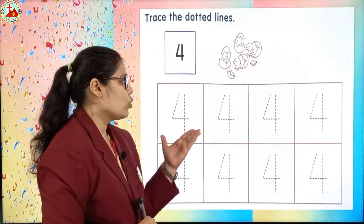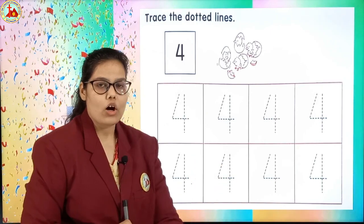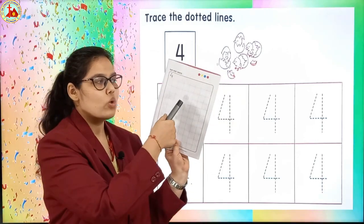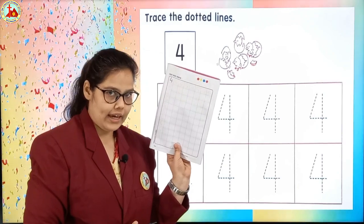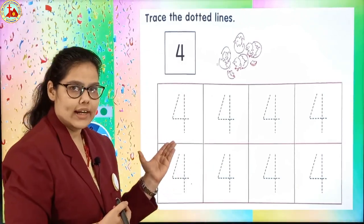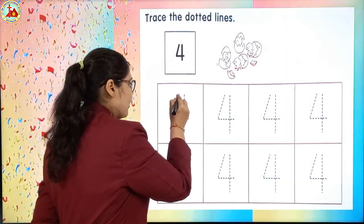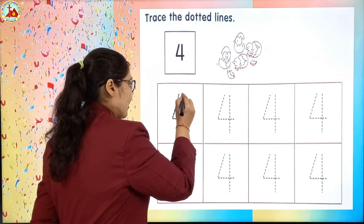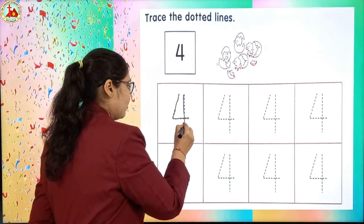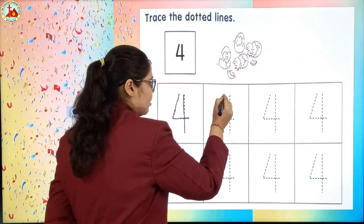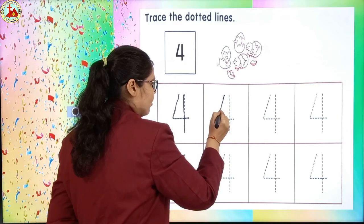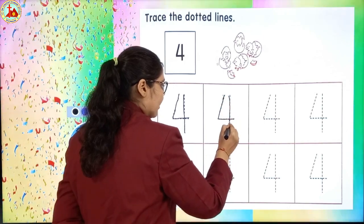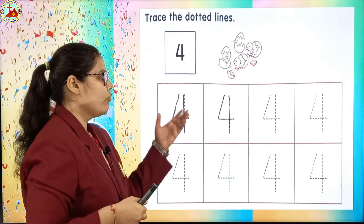Now children, we will see how to trace number 4, because in your textbook one page is there where you have to trace the number. On another page you have to write number 4 by your own. So let's see how to trace the dotted number: slanting line, then sleeping line, then standing line. Like this way you have to write in the full page.